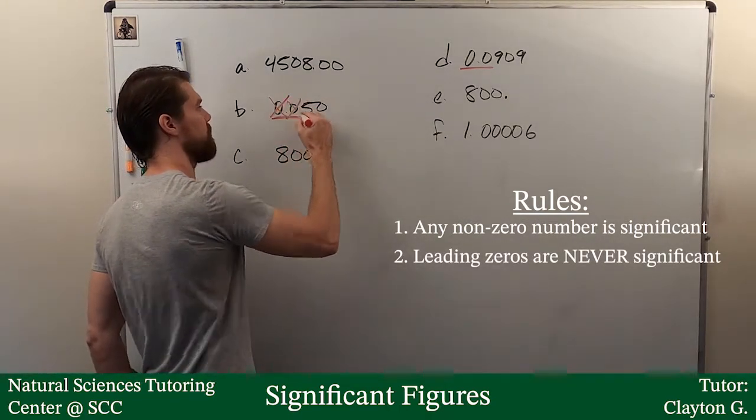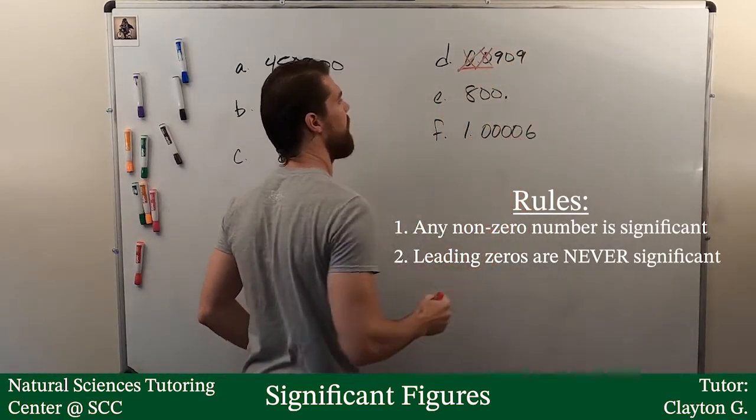Leading zeros are never significant. So, we can just cross those right out. Leading zeros are never significant.